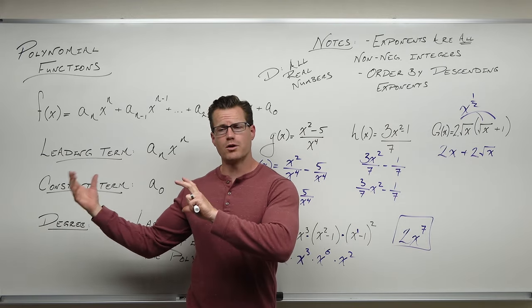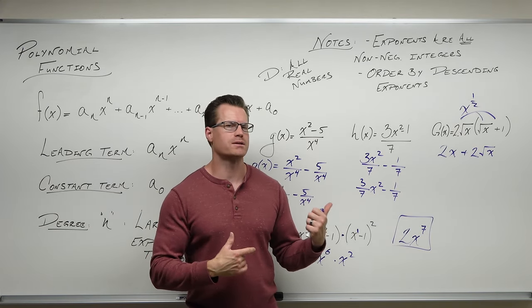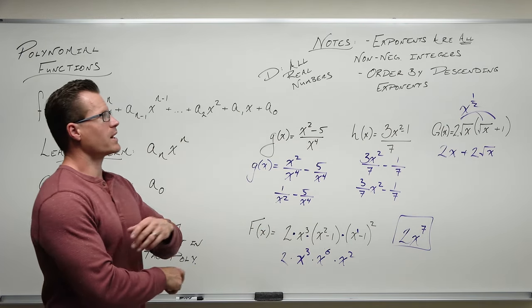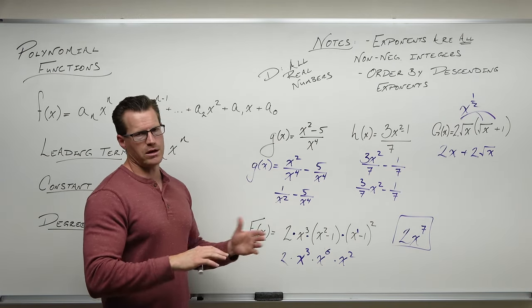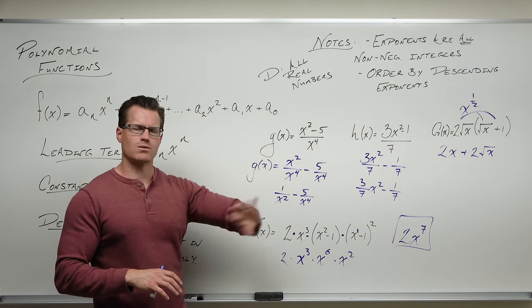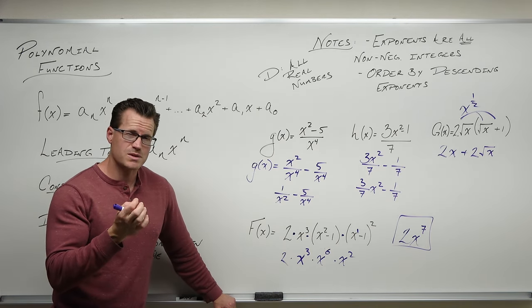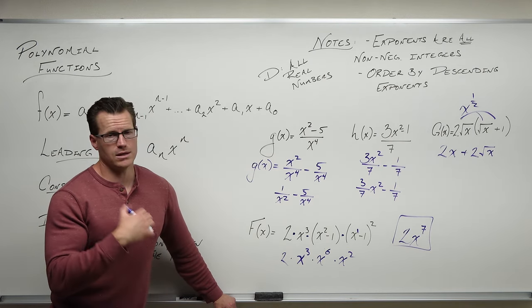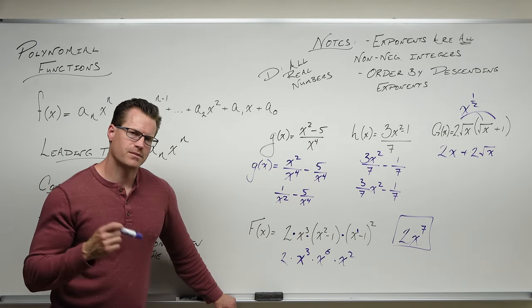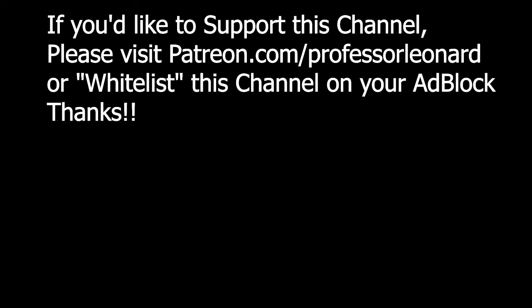Polynomials are these many-termed expressions added and subtracted. You want them in order. You want to be able to find your leading term — it's super important — along with your degree and your constant. All exponents for polynomials have to be non-negative integers — zero and positive whole numbers. If not, you don't have a polynomial. Polynomials' domain is all real numbers, which means you have zero issues, and it's going to be a smooth continuous curve with no cusps, no gaps, no holes, and no asymptotes. We'll get into power functions next time.